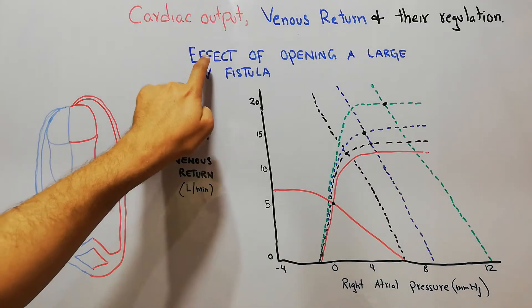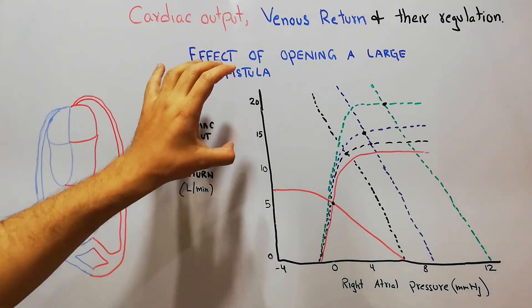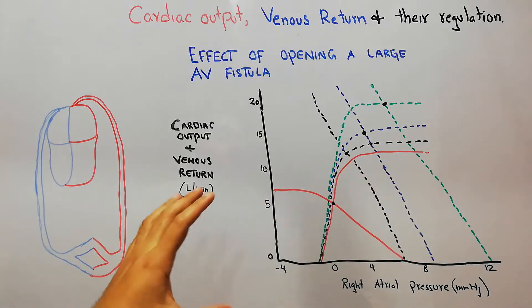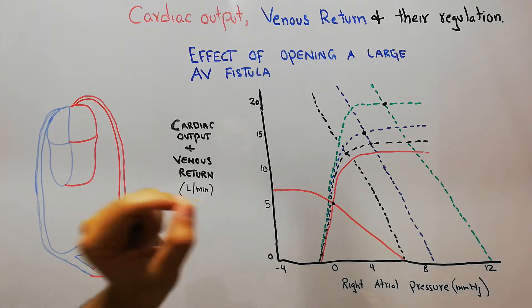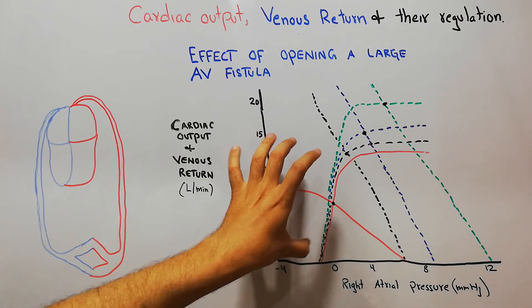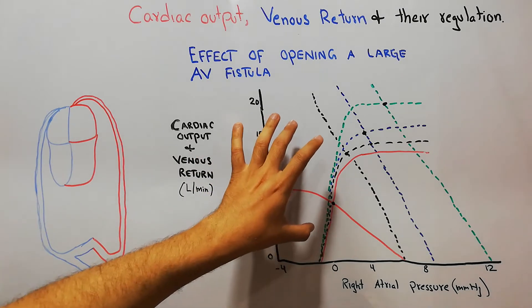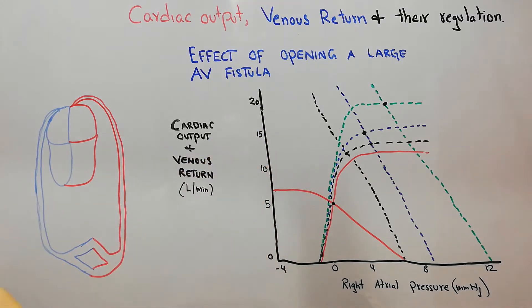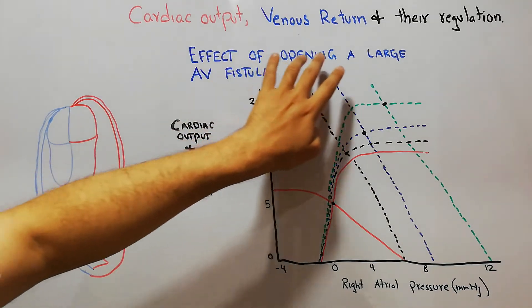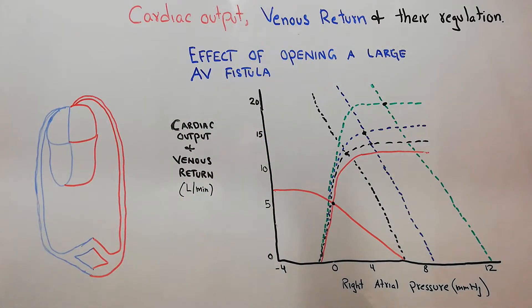Today in this lecture we are going to discuss the effect of opening a large AV fistula, or arteriovenous fistula, on the combined cardiac output and venous return curve. We have previously discussed the effects of increasing blood volume and sympathetic stimulation on the combined cardiac output and venous return curve.